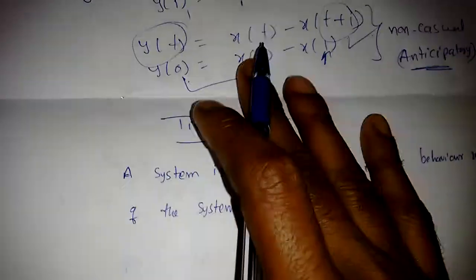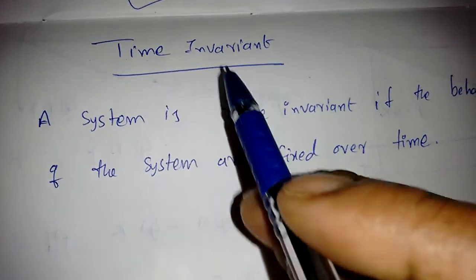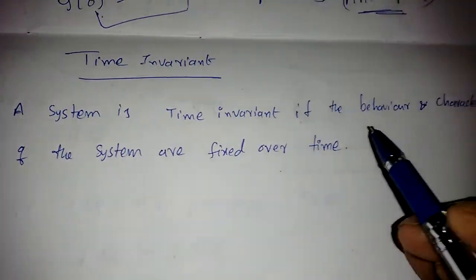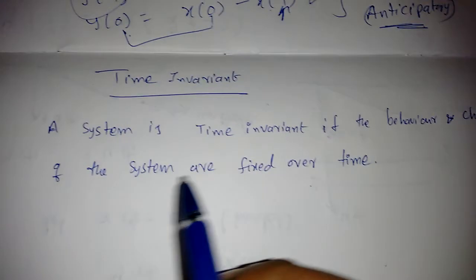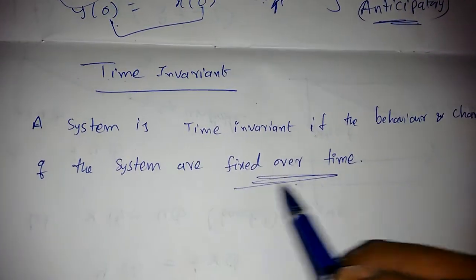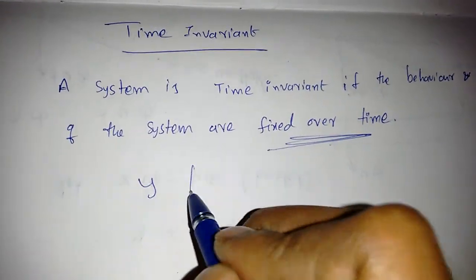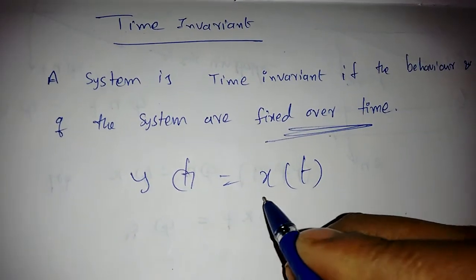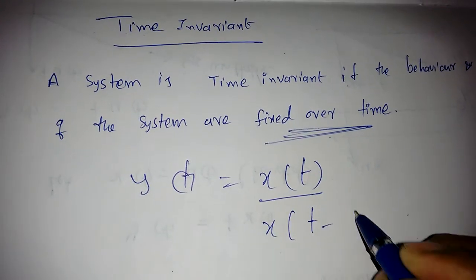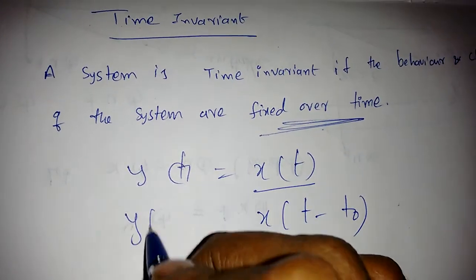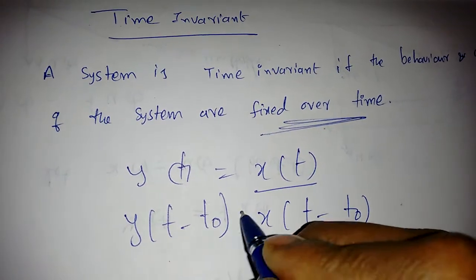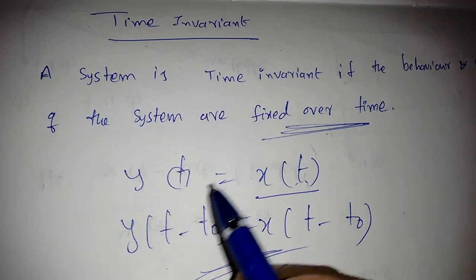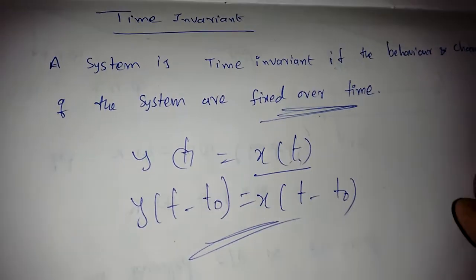Next is time invariance. A system is time invariant if the behavior and characteristics of the system are fixed over time. That means if y(t) = x(t), and if x(t) is delayed by some t-naught, then the output should also be delayed by t-naught only. Whatever time change occurs at the input, the same time change should occur at the output — that is a time invariant system.